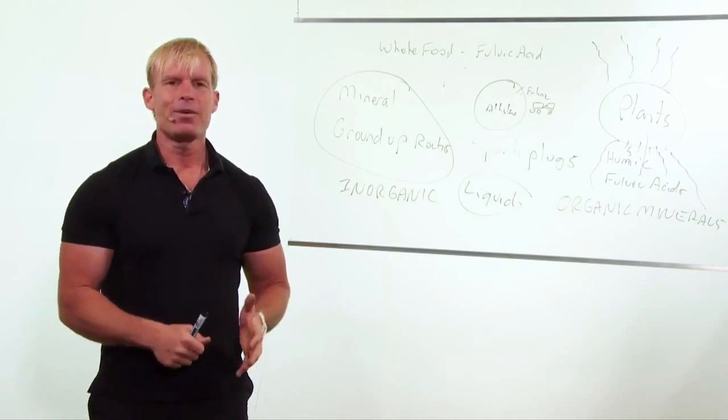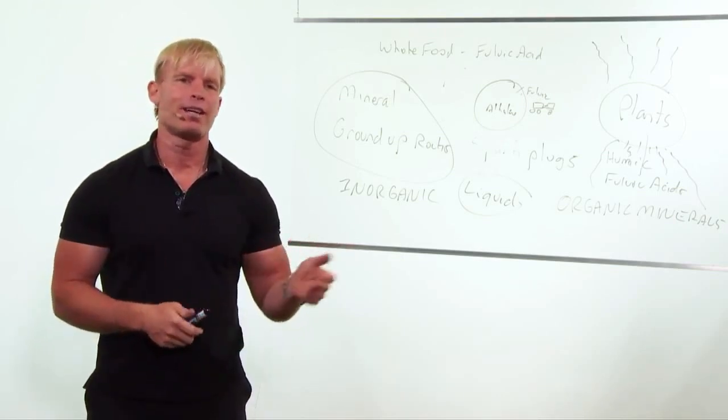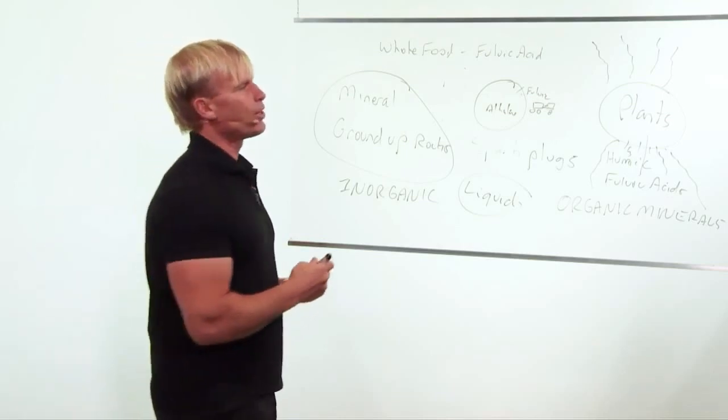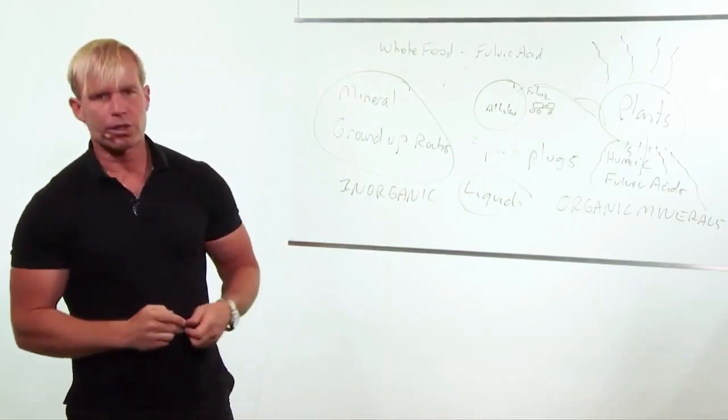There's a great study where it showed these chickens that were pecking on the ground and they were able to make four times more calcium than they were consuming because they had enough silica and magnesium. And of course, fulvic acid is something that's going to accelerate that.